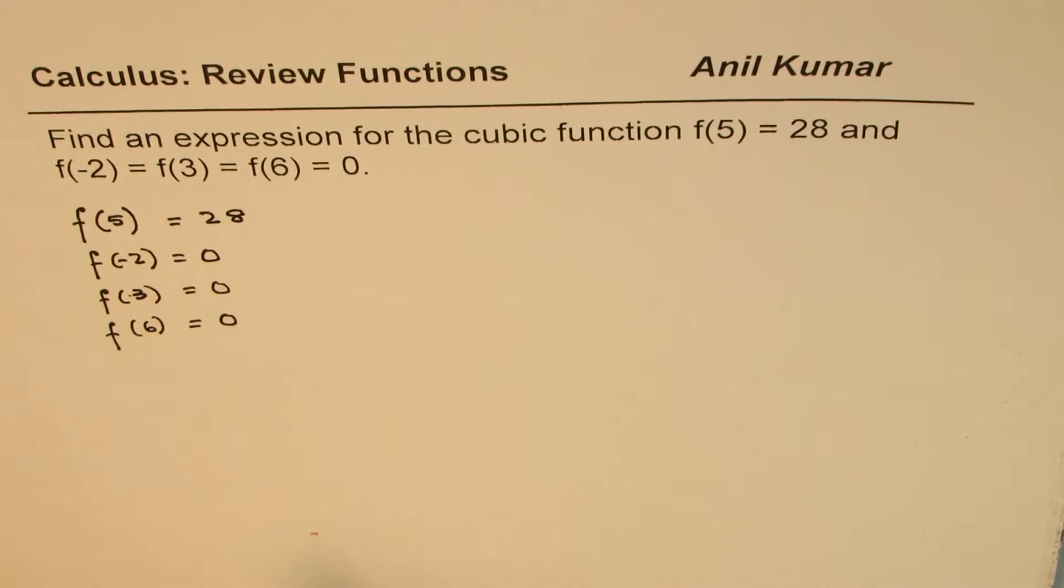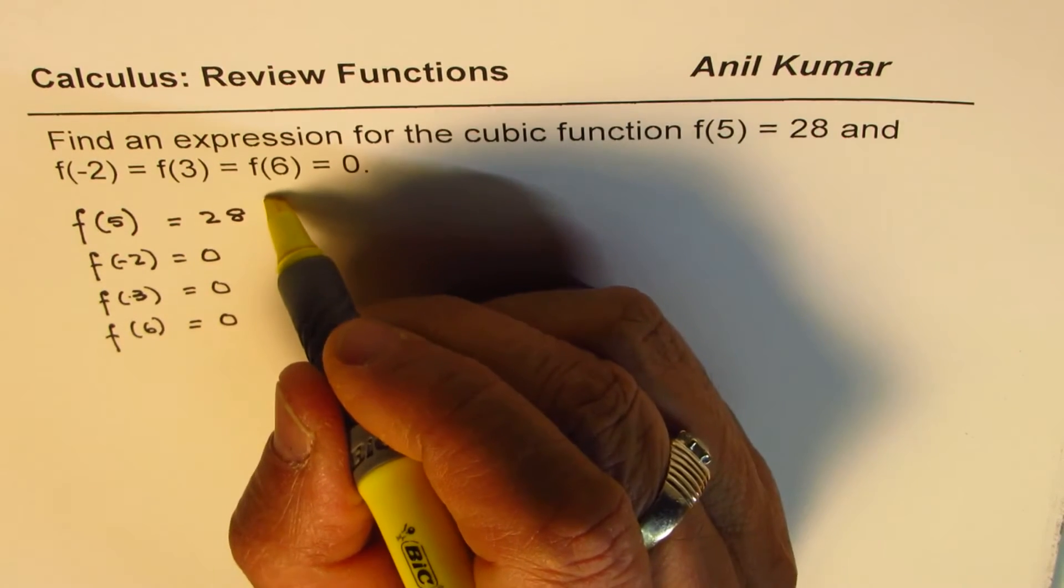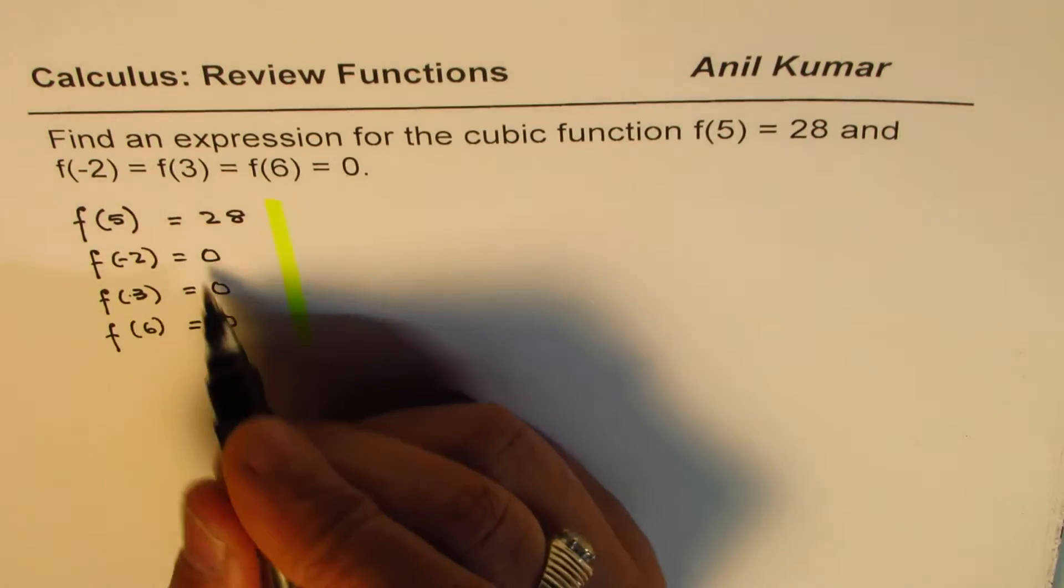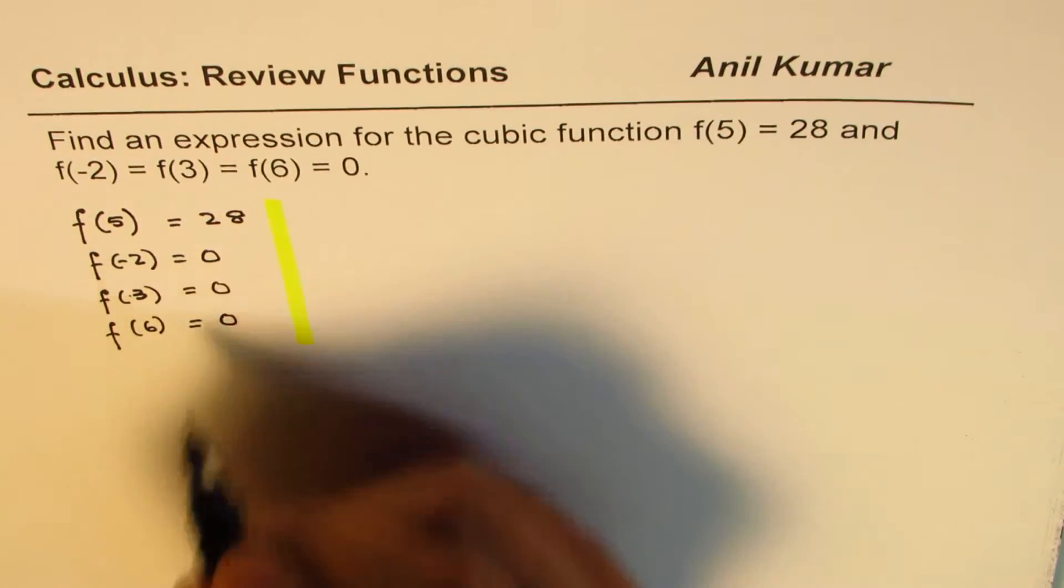That's a cubic function with three zeros. How do you get an equation for such a function? Well, that is simple. Three linear zeros, and we can always write this function as product of these factors.